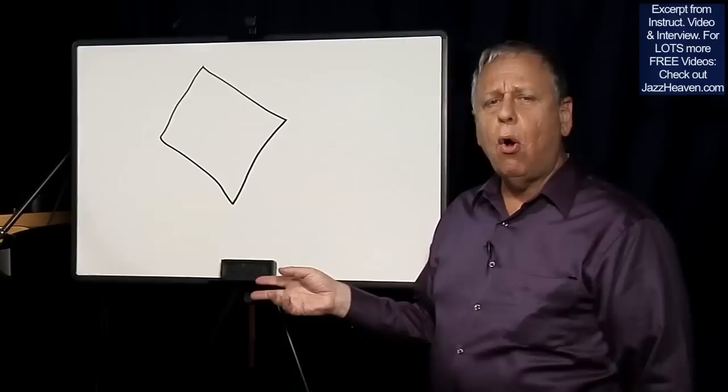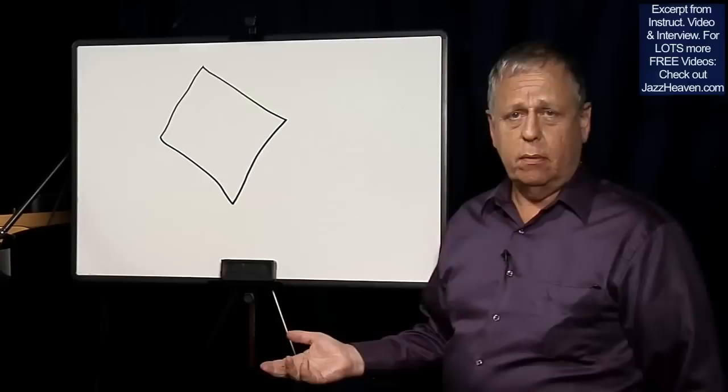The learning diamond has four corners, and there are four goals to be achieved when learning, let's say, a difficult line at a fast tempo.